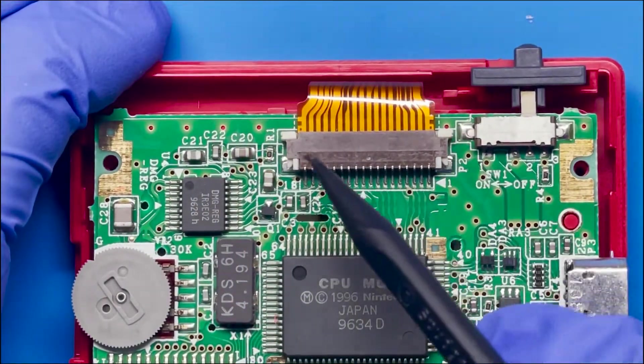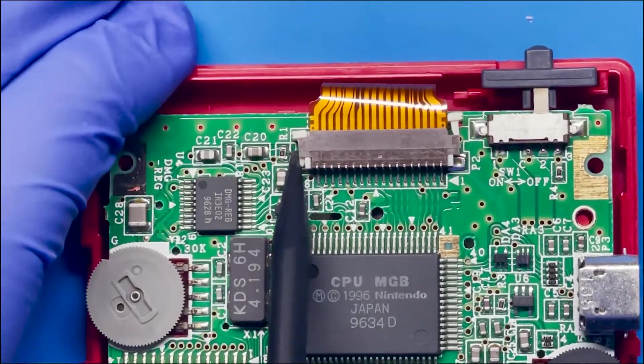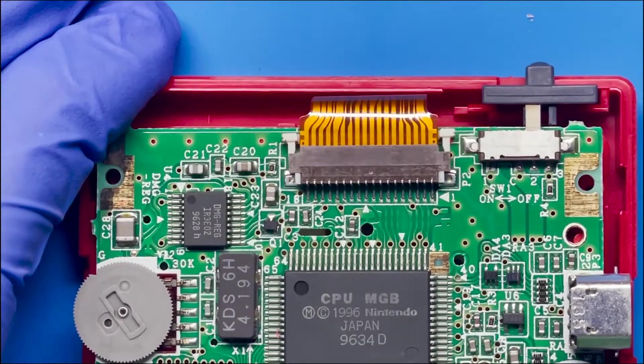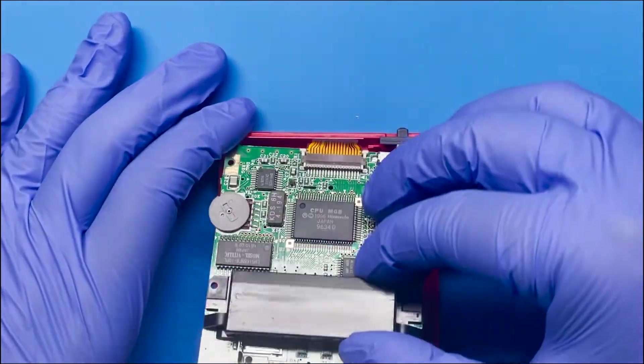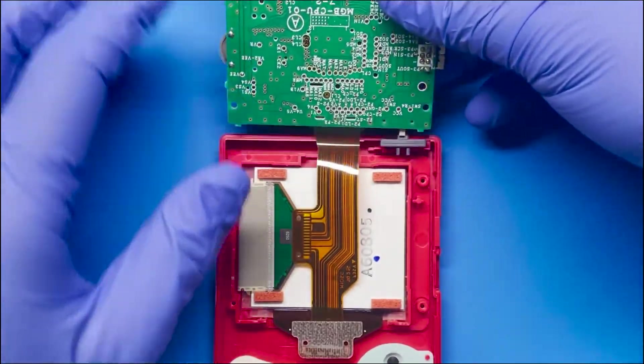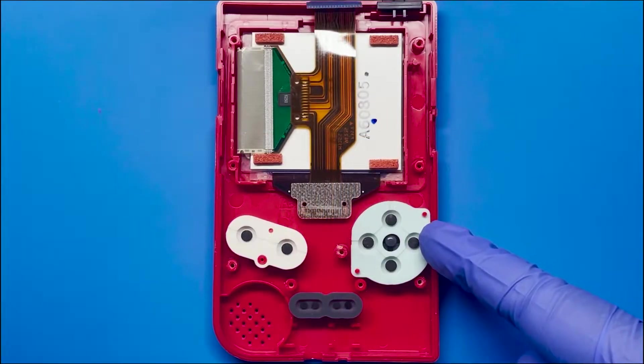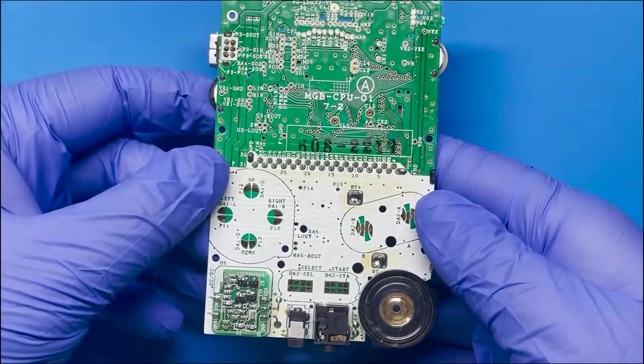Now once the screws are removed, we want to make sure that these are pushed up. That way it unlocks this ribbon and we can free it up. So here we go. What I like to do, let me zoom out here, is I like to flip it over like this and then pull it out. And that makes it a lot easier. We're not going to be working with any of this, so I'm going to put this to the side and we're going to work on the board. Let's flip it around and see how everything looks.